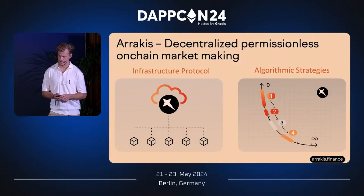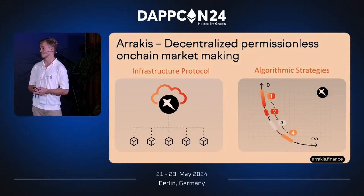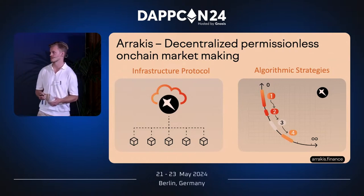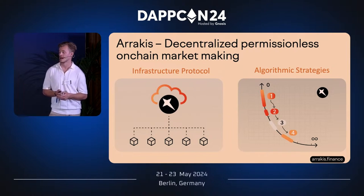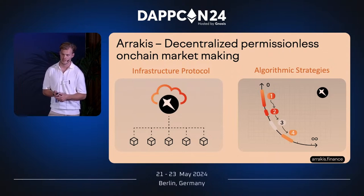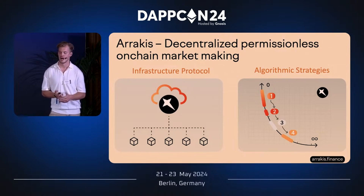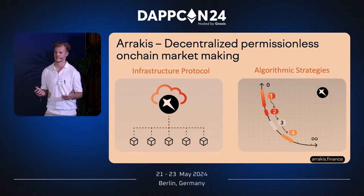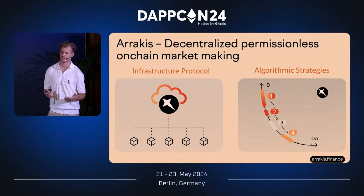You may know Arrakis as an automated liquidity manager, but Arrakis is more than that — it's a decentralized permissionless on-chain market maker. We focus on two sectors: infrastructure and client services. HOT AMM is one of the products we'll be launching soon, bringing innovation to the entire DEX and market-making sphere. We also serve algorithmic strategies to clients — DAOs, labs, and teams raising money via tokens or launching tokens — providing sustainable liquidity strategies.